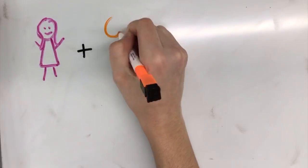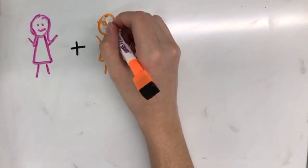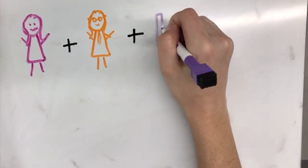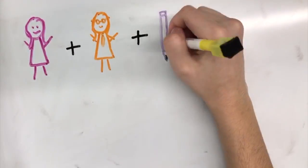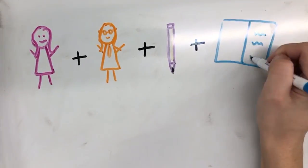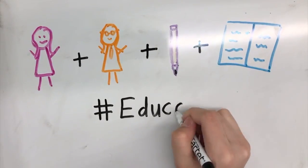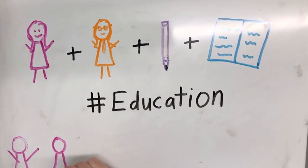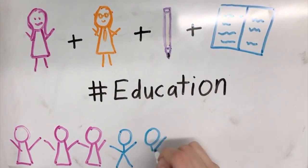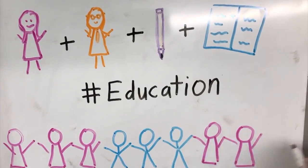In the words of Malala herself, one child, one teacher, one pen, and one book can change the world. Education is the only solution. Education first. Join hands and support hashtag education for all boys and girls. No one should be left out.